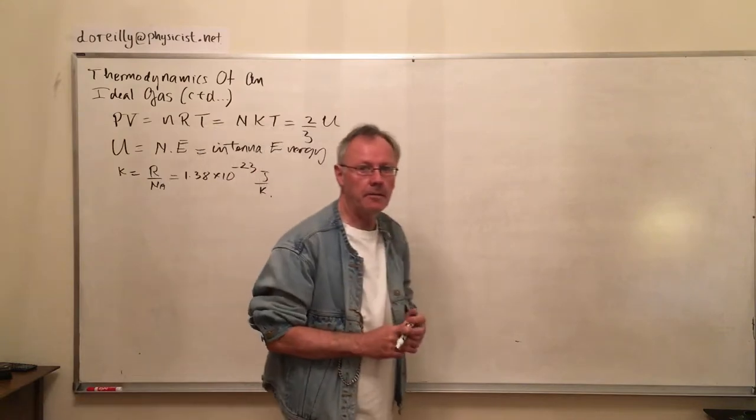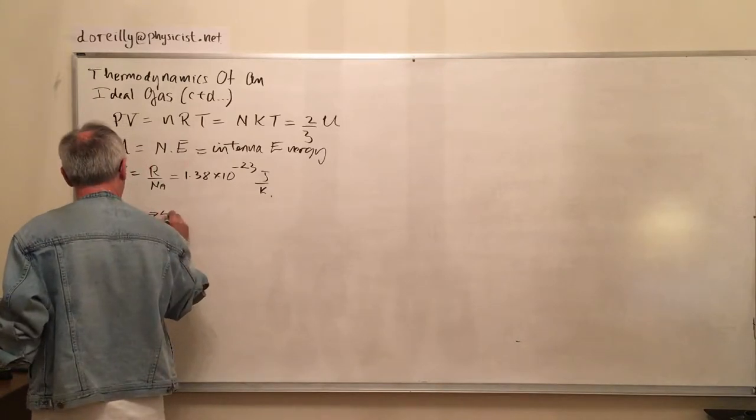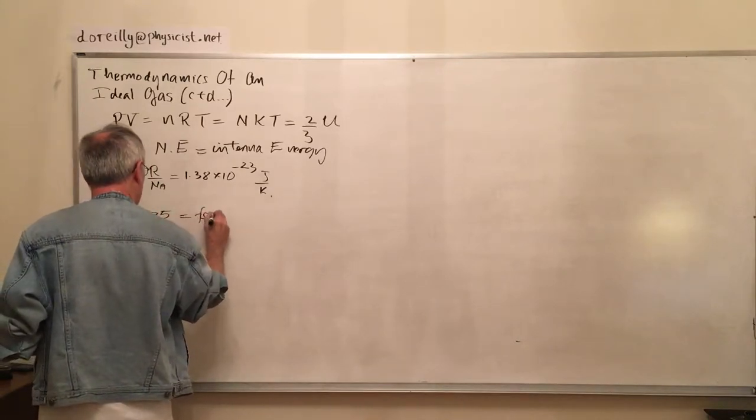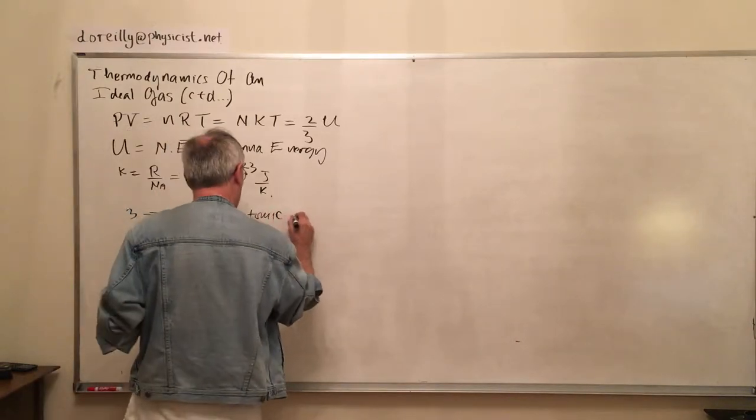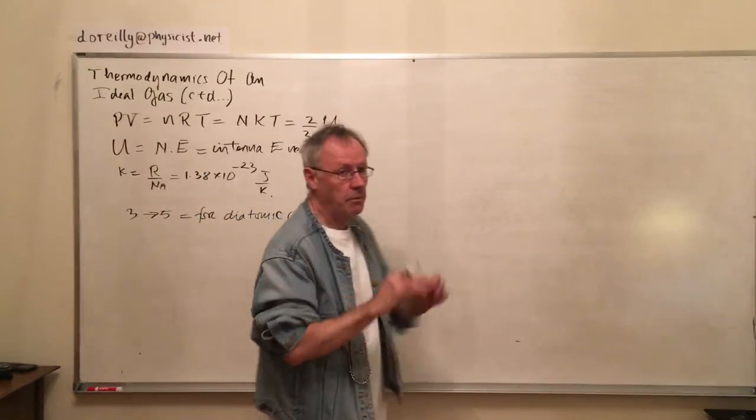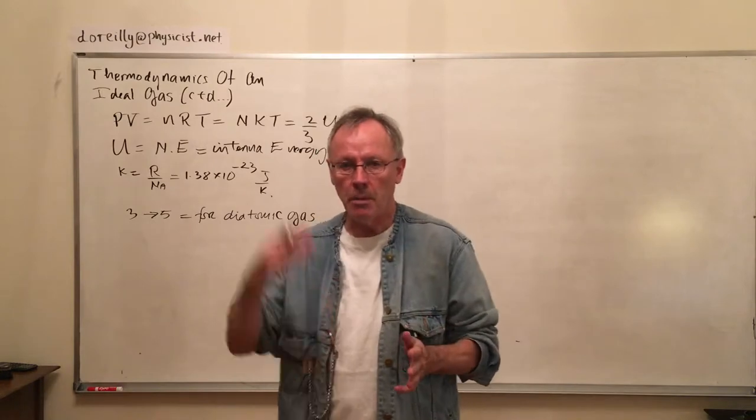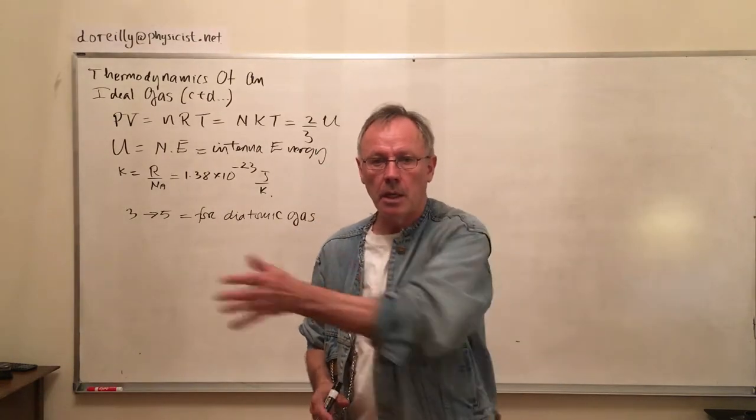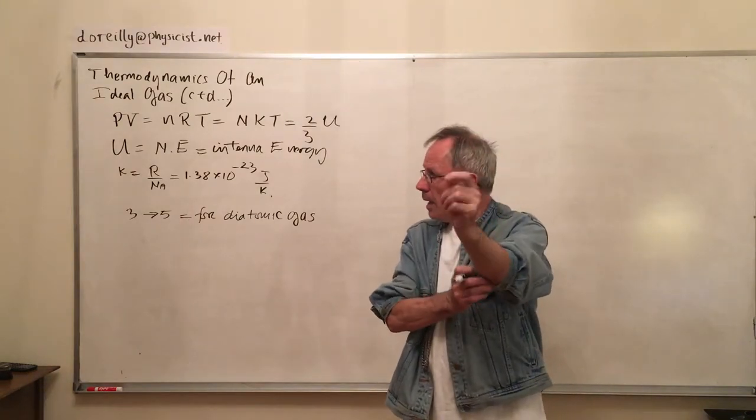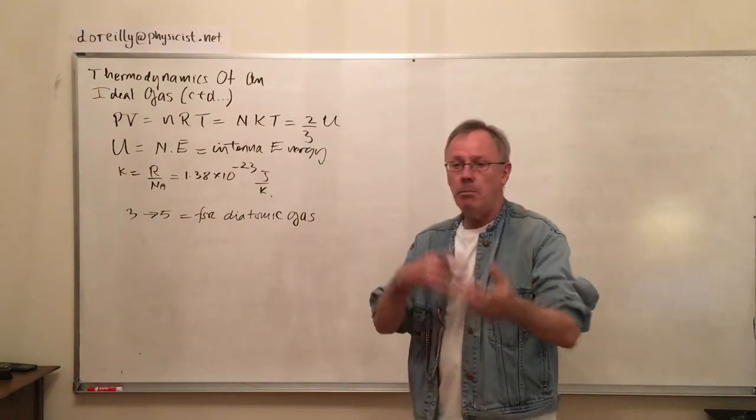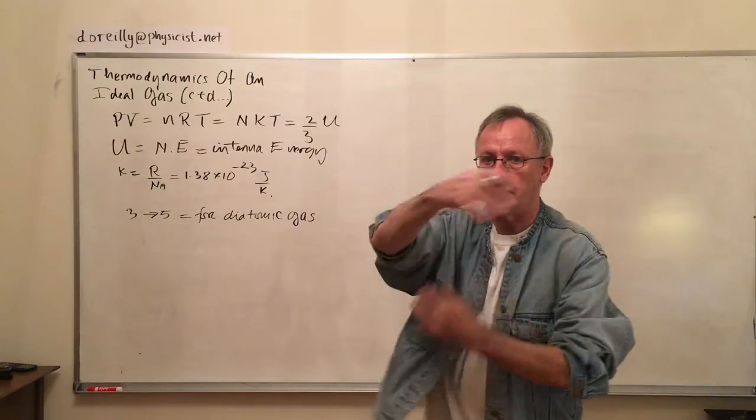This factor three comes from three degrees of freedom for a monatomic gas. That three will become a five for a diatomic gas because in the diatomic case you have two extra degrees of freedom. The monatomic case is freedom to go up, across, and in and out of the board - the X, Y, and Z degrees of freedom. But when we have a dumbbell shaped molecule it has two rotational degrees of freedom.